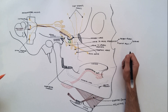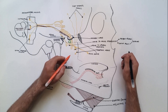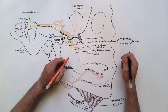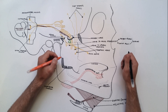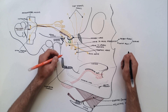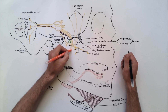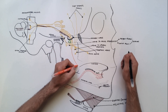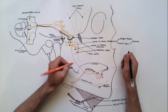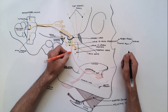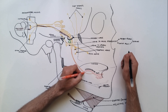Now we are in a position to describe the branches from the posterior division of the mandibular nerve, and I will indicate those branches using the orange color. In contrast to the anterior division of the mandibular nerve, the posterior division is mainly sensory and it contains only few motor fibers. The posterior division gives off three branches, and first to indicate is the lingual nerve, which is the smaller terminal branch of the posterior division of the mandibular nerve.